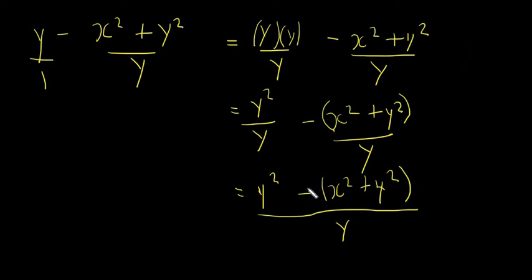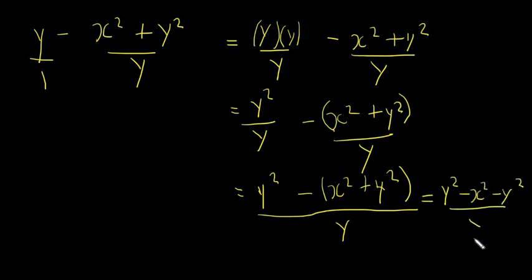Be careful about the minus sign here — a lot of people would just put these together and get minus x squared plus y squared over y, but that's incorrect. The minus is minusing everything in the bracket, so it has to be minus x squared minus y squared. So we get y squared minus x squared minus y squared, all over y. The two y squareds cancel — plus and minus — and we're left with minus x squared over y.